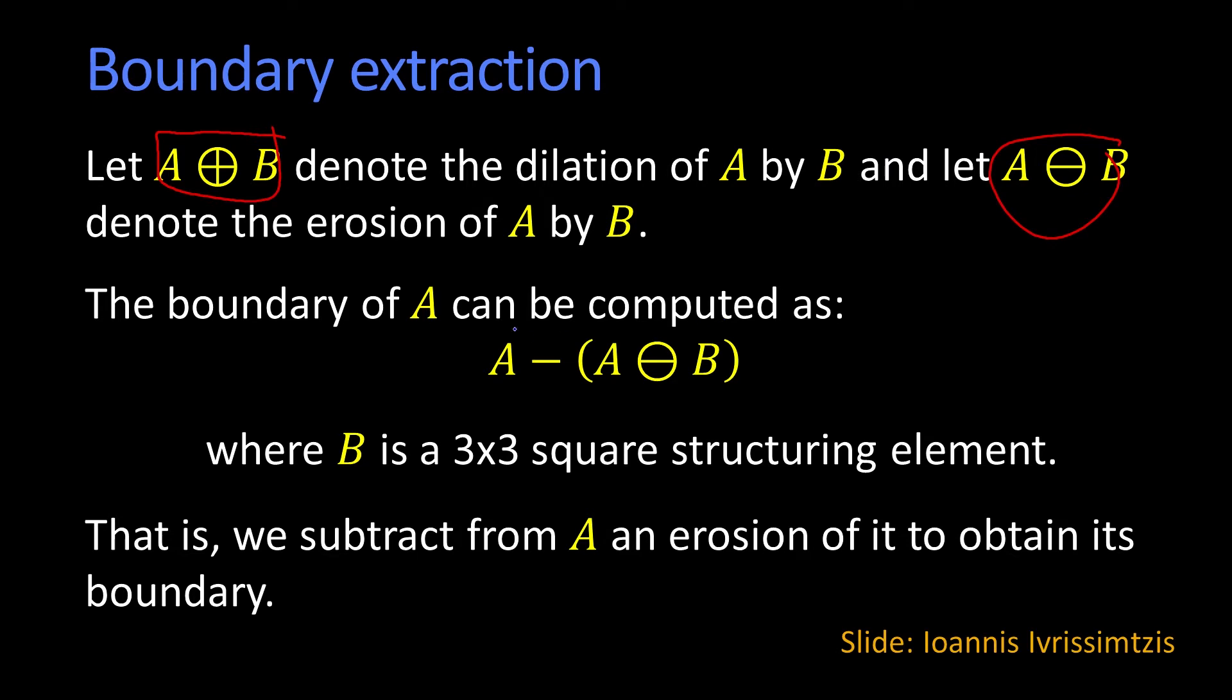If A plus B is the dilation, A minus B is the erosion, I can get the boundary by just taking the object and subtracting out the eroded version of it. Here they talk about B being a 3 by 3 square, it could be whatever size square.